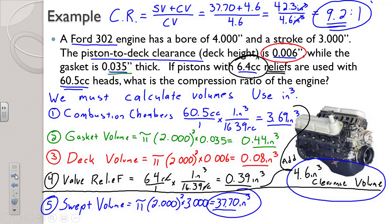There's a lot of math in that problem — in my opinion this is the trickiest stuff we do in the whole course. But focus on finding your five volumes. Either those are given to you for basic problems, or you have to measure them — which is realistically what you'd do building a race engine. Calculate those five volumes, find your clearance volume by adding the four little ones, find your swept volume as the displacement of one cylinder, then use your compression ratio formula to get that final number.